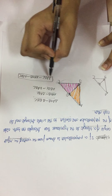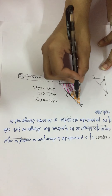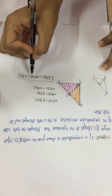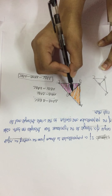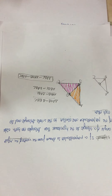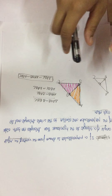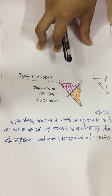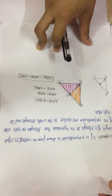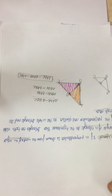So triangle ABC is similar to triangle ADB, which is similar to triangle BDC. All three triangles are similar to each other. You just have to remember what this theorem is telling us — it is important if you have to do the proof of Pythagoras theorem.